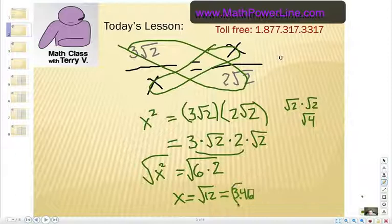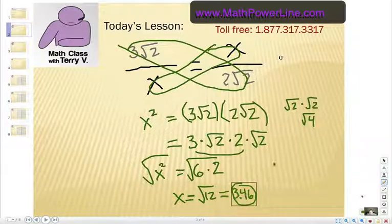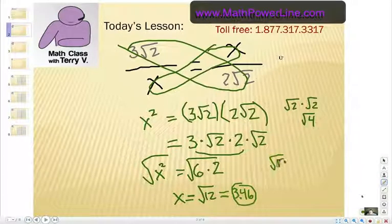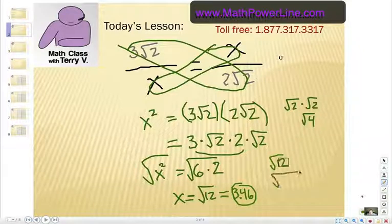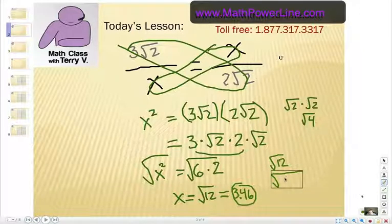Now, in some classrooms and some teachers and textbooks, you might need to leave it as a simplified radical. So, instead of converting it into a decimal, you're going to take radical 12, and think of it as the product of two numbers. But you want to choose the numbers so that one of them is a square number, a perfect square number.